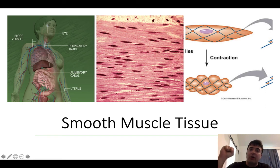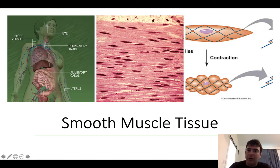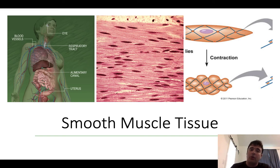Smooth muscle tissue lines blood vessels like arteries and veins — when you want to decrease blood flow to an area, smooth muscle contracts; when you want to increase it, smooth muscle relaxes. In the respiratory tract, smooth muscle lines the bronchi and bronchioles, decreasing airflow by contracting or increasing it by relaxing. Lining your GI tract — mouth, esophagus, stomach, small intestines, large intestines, rectum, anus — smooth muscle regulates the movement of food and plays an important role in digestion. The urinary tract and reproductive tract are also lined by smooth muscle tissue.